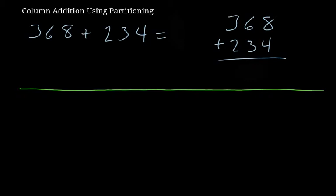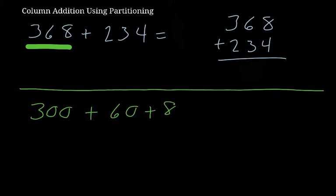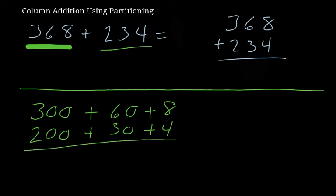So we have 368 as our first number, and we would write 300 plus 60 plus 8. Underneath we write 200 plus 30 plus 4. Then we add it all up: 8 and 4 is 12, so we write 12, plus 90, plus 500.